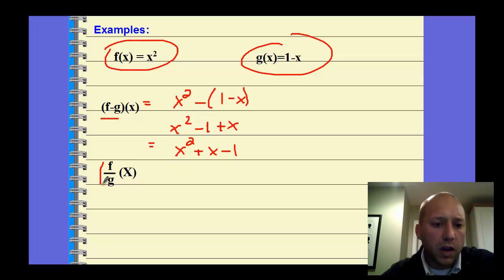For (f/g)(x), we can just write it as a fraction, the f function divided by the g function. There's nothing to simplify here. We cannot reduce the x's because it's a quantity of 1-x in the denominator. We have to do 1-x before division. So we cannot do any reducing. But we do need to state that x cannot equal 1 because of the implied domain. We cannot have a denominator of zero.